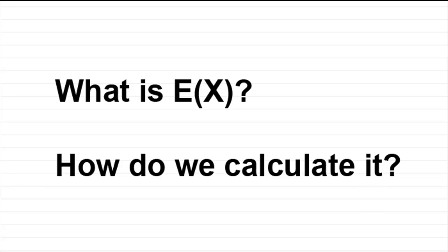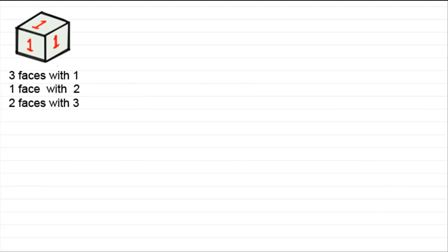Well, to answer this question, what I've got is a special die. It's a six-sided fair die, but instead of having the numbers 1, 2, 3, 4, 5 and 6 on it, what we've got is three faces with a 1, one face with a 2 and two faces with a 3. You can't see the one face with a 2 and the two faces with a 3, but let's say they're around the other side.